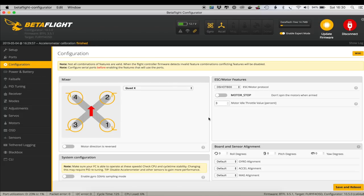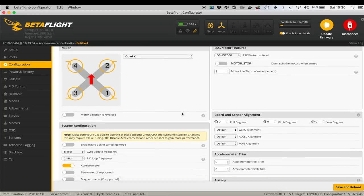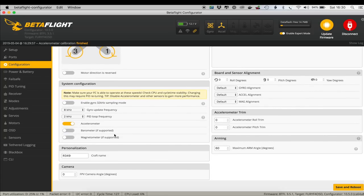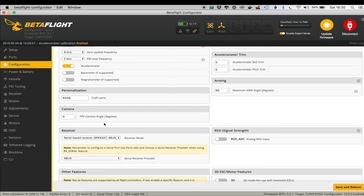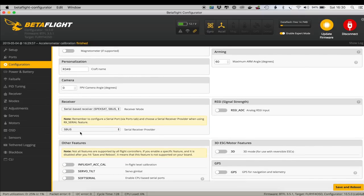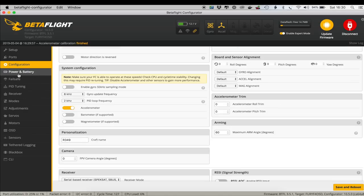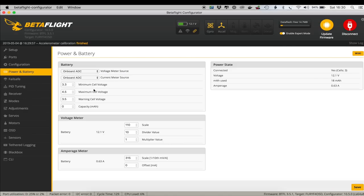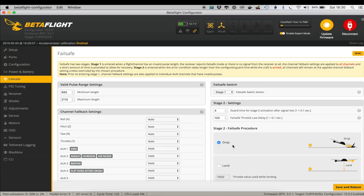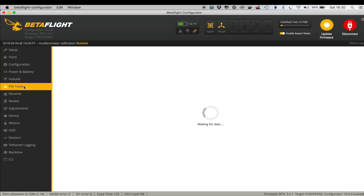Configuration, we're on DShot 600 which is fine, all these are straight out of the factory. Craft name and we're set to S-bus so all that is good. Power and battery warnings, they're all fine. Failsafe is set to drop which we will check in a minute.